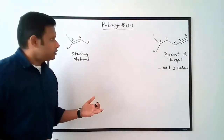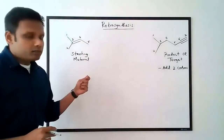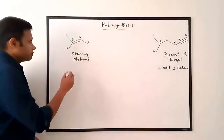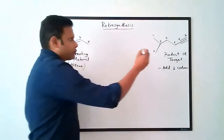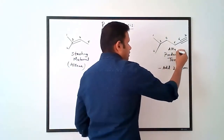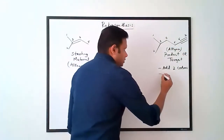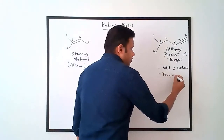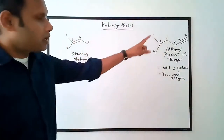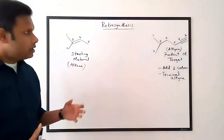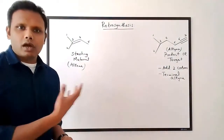The second thing you look for is a difference in functional group, if functional groups have changed. In this particular problem, notice how our starting material is an alkene whereas the final product is an alkyne. I would also like to note that my final product is a terminal alkyne — an alkyne at the end of a carbon chain. That's important because it could give us clues about how to approach this problem.